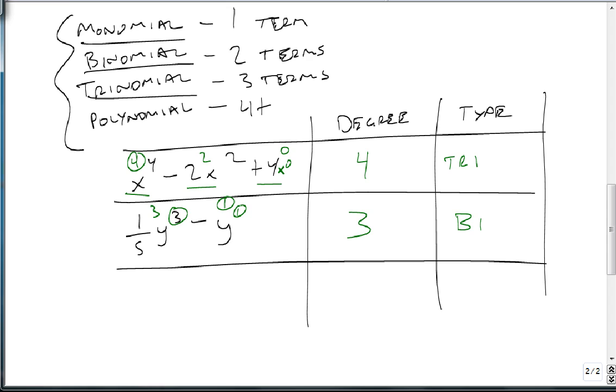Our last one that we're going to look at: minus 2.7m to the 4th n to the 12th, minus 4.5m to the 10th n to the 4th, plus 9.1m to the 8th n to the 6th, plus mn to the 9th.